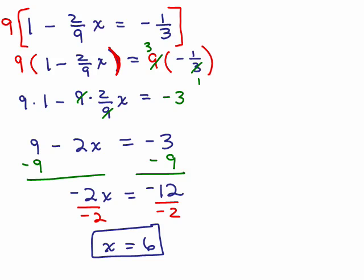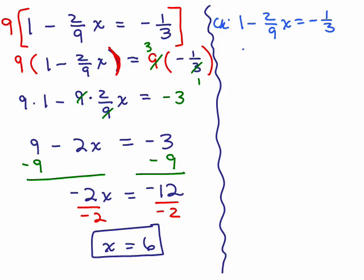Now, it's true that this could have been done very differently, and I'm going to do that next, but let's just check this first. Over here, check, is 1 minus 2 9th x equals negative 1 3rd. So we are going to put in positive 6 for x, and we're going to simplify. So we have 1 minus, what happens here?